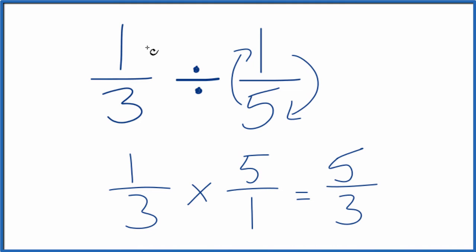So when we divide 1/3 by 1/5, we get 5/3. This is an improper fraction. You could change it to a mixed fraction.